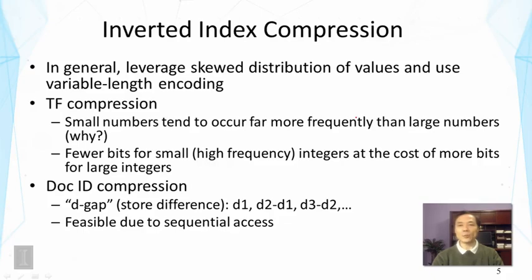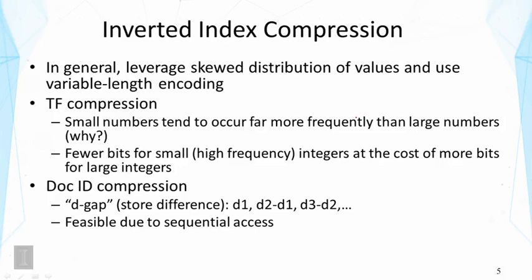This d-gap approach is feasible because document IDs only need to be accessed sequentially. To recover an exact document ID, we sequentially decode: recover the previous document ID, then add the gap to obtain the current one. This works naturally because once we look up a term, we fetch all matching document IDs and process them sequentially.